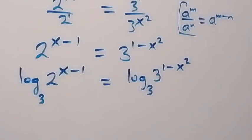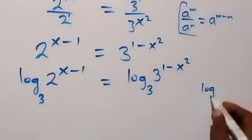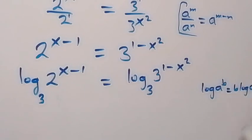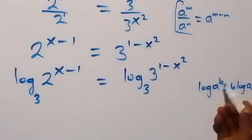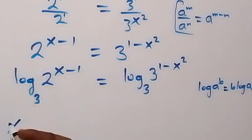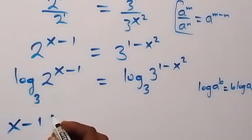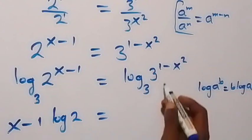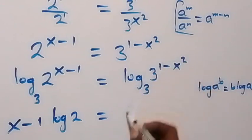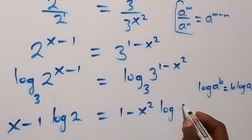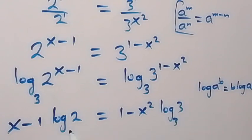From the power rule of logarithms, when we have log of a raised to power b, it is the same as b times log a. So the power here, we can take it to the front. This becomes x minus 1 multiplied by log₃2, equals similarly here the power comes down, giving 1 minus x squared times log₃3.